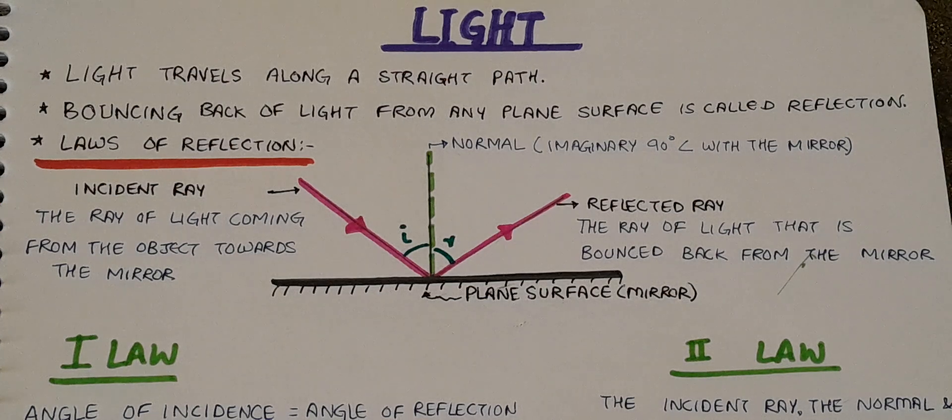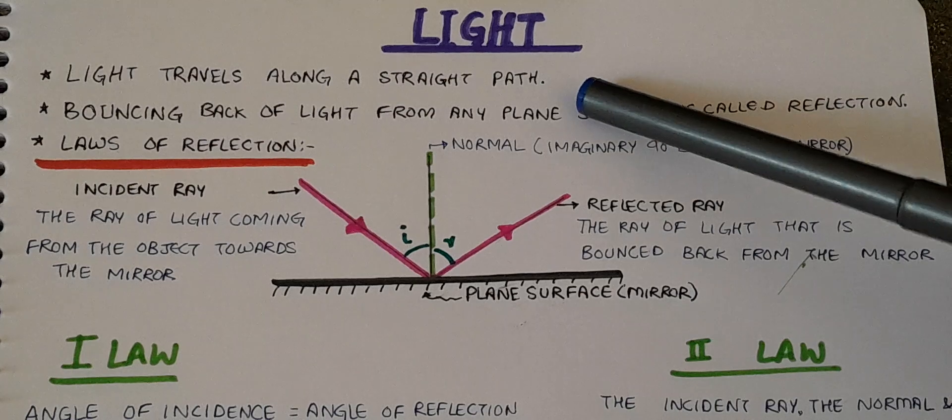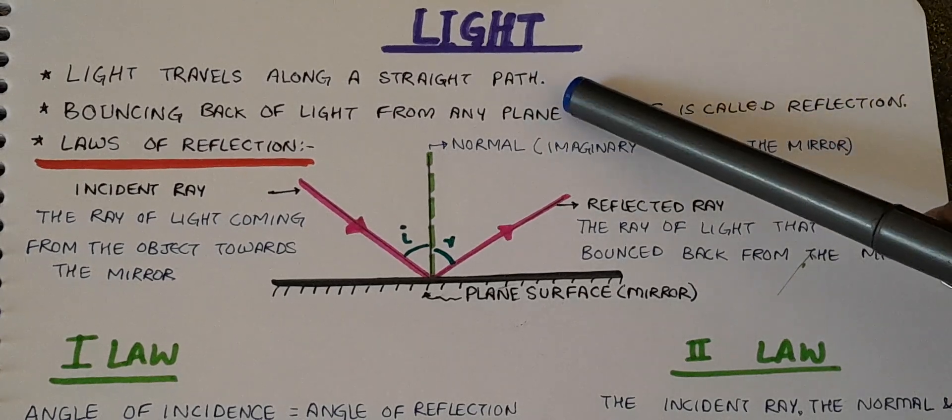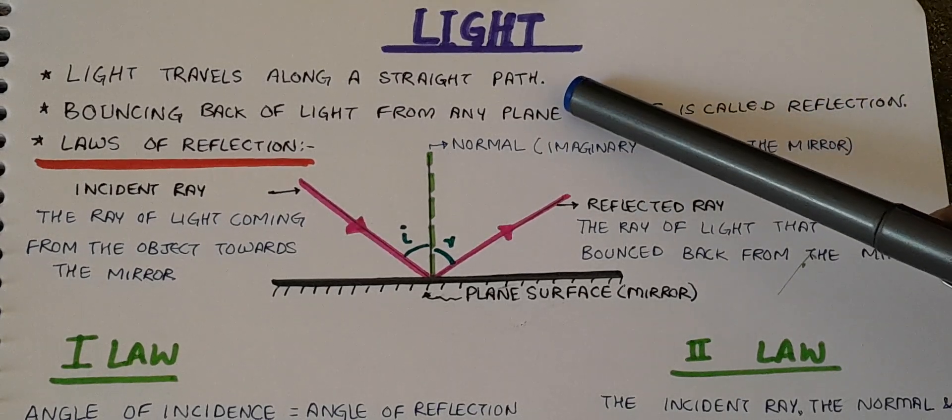Revision topic: light. Light travels along a straight path. Light ki ray hamesha ek sidhe raaste par hi chalti hai.